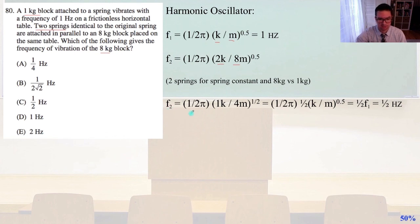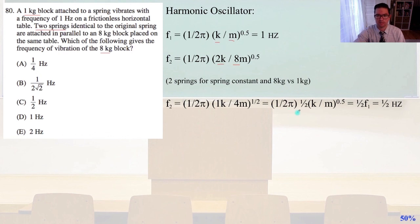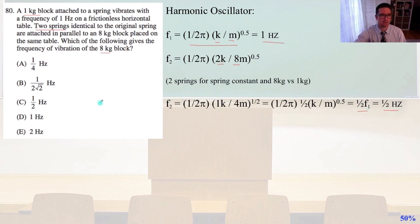F2 equals one over 2pi times the square root of K over 4M, which equals one over 2pi times one-half the square root of K over M. That equals one-half of F1. Since F1 is 1 Hz, F2 equals one-half Hz. That's answer C. We're getting close to the finish line — see you in the next set of videos.